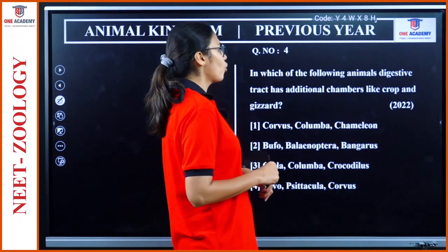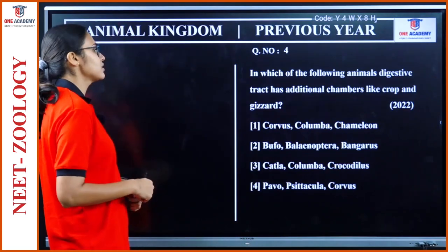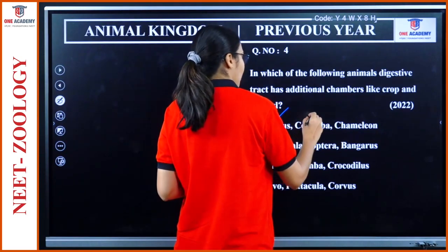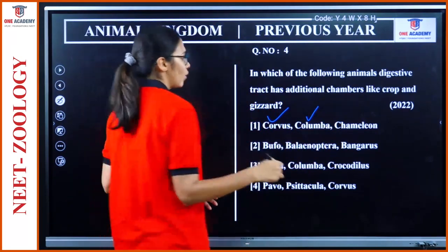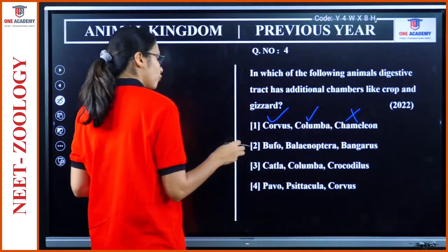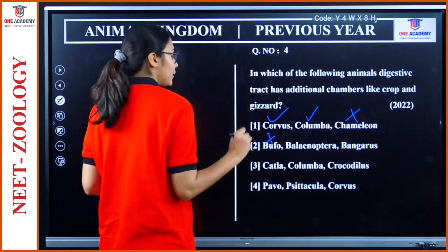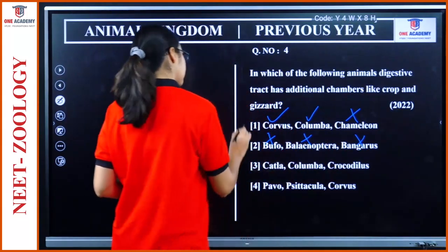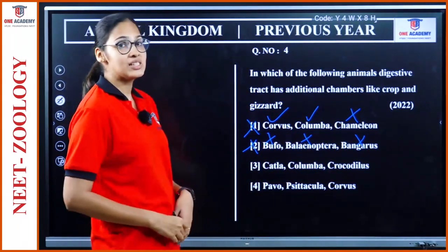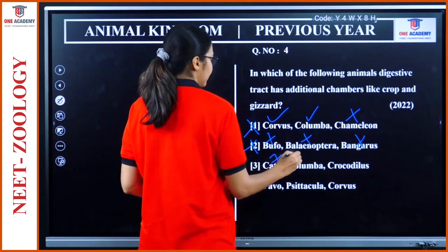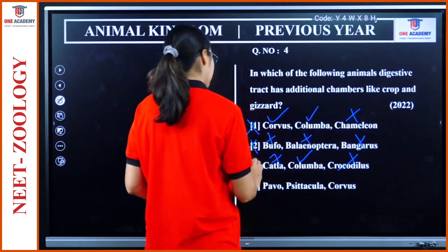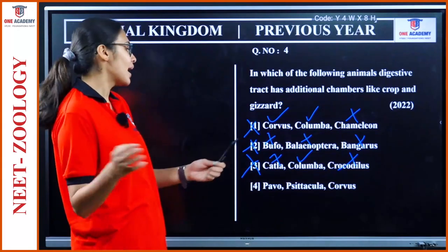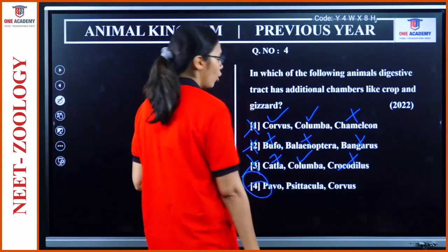Question 4: 'In which of the following animals does the digestive tract have additional chambers like crop and gizzard?' Birds have crop and gizzard. Corvus is crow, Columba is pigeon — both birds. Cavernus and the reptile option are wrong. Buffo is amphibia — wrong. Pavo is peacock, Psittacula is parrot, Corvus is crow — all birds. Option 4 is the right answer.